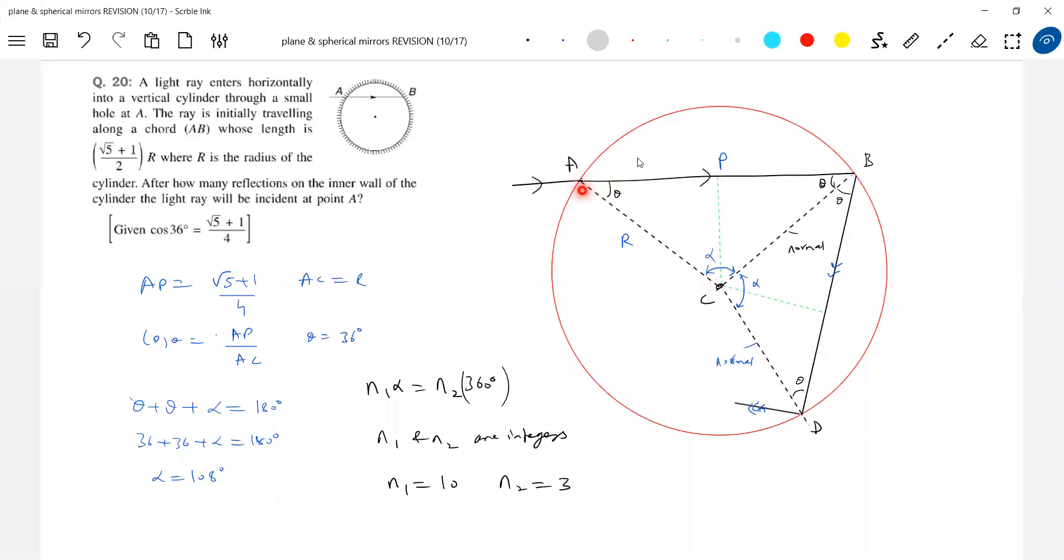After omni reflections on the inner wall of the cylinder, the light ray will be incident at point. So after reflection, I think you should not take this reflection. Again, next. Again it has to come back to it. So total number of reflections should be nine.